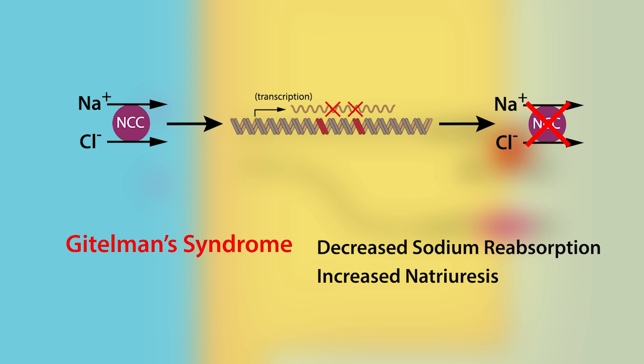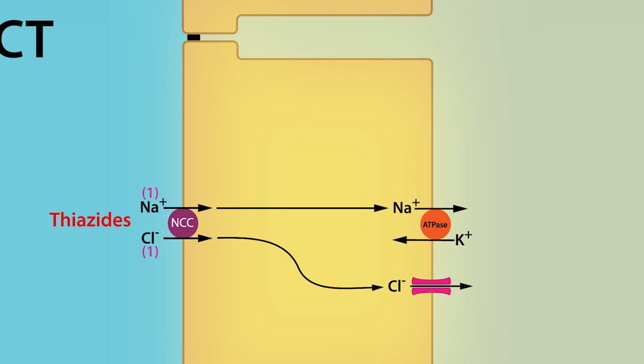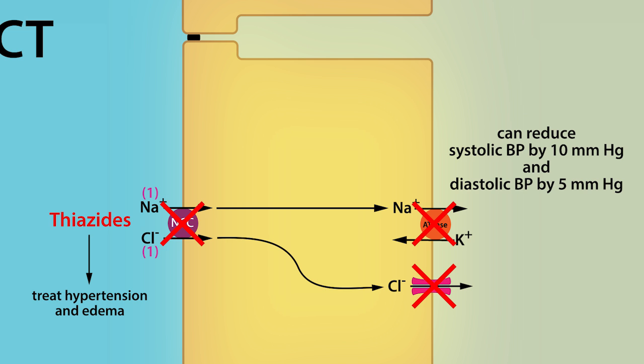This is clinically relevant because the administration of thiazides produces a similar effect. Thiazides are a class of diuretics commonly used to treat hypertension and edema. They work by inhibiting NCC-dependent sodium reabsorption along the distal convoluted tubule, which can reduce systolic and diastolic blood pressure by 10 and 5 millimeters of mercury respectively. It does this by reducing the extracellular fluid volume.